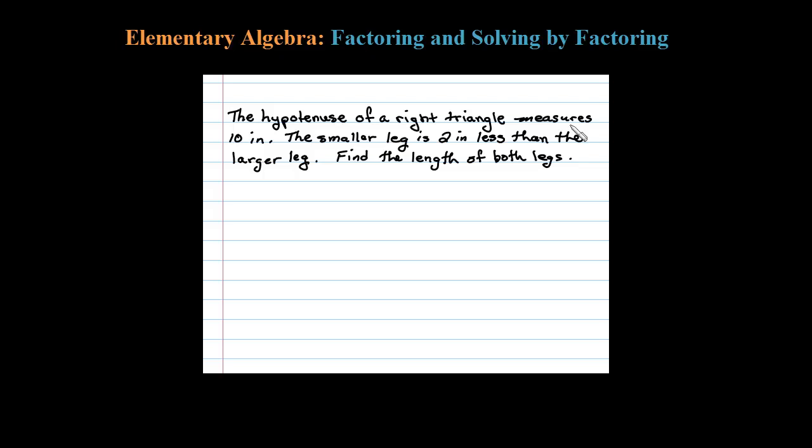The hypotenuse of a right triangle measures 10 inches. The smaller leg is 2 inches less than the larger leg. Find the length of both legs. Let's try to identify our variables here by drawing a picture.